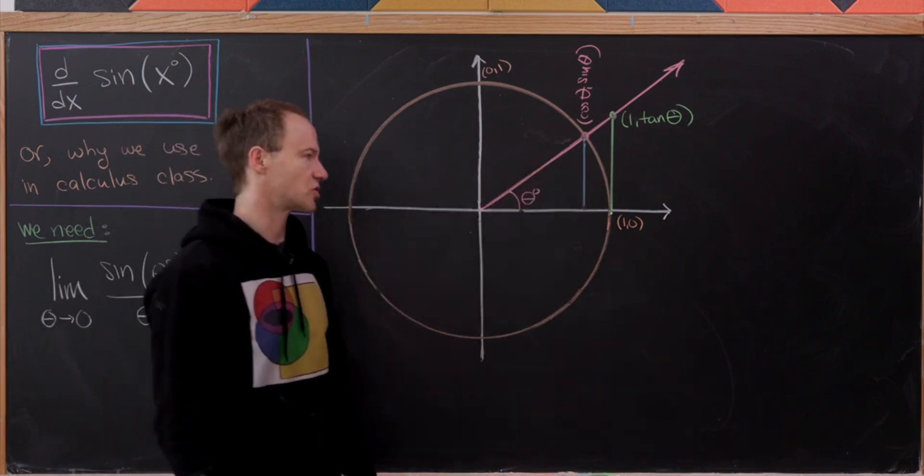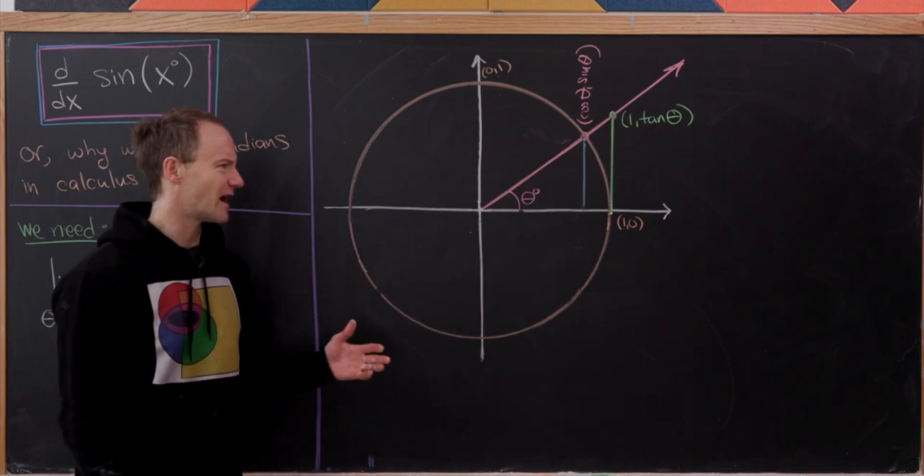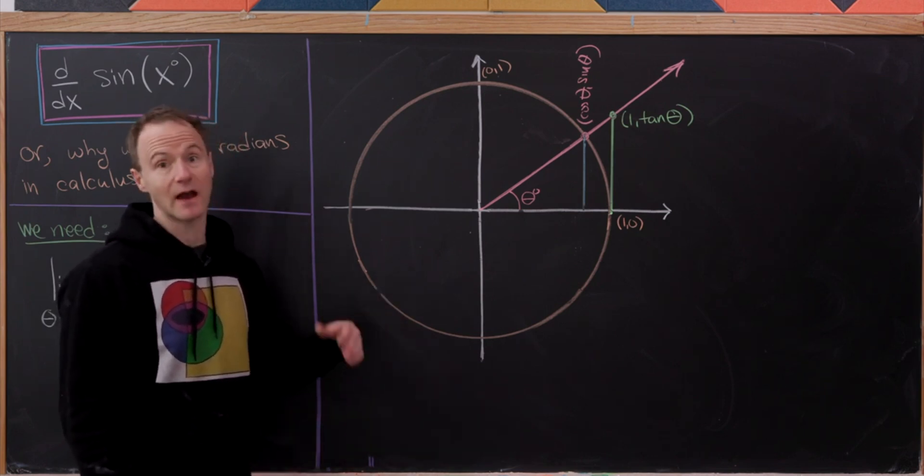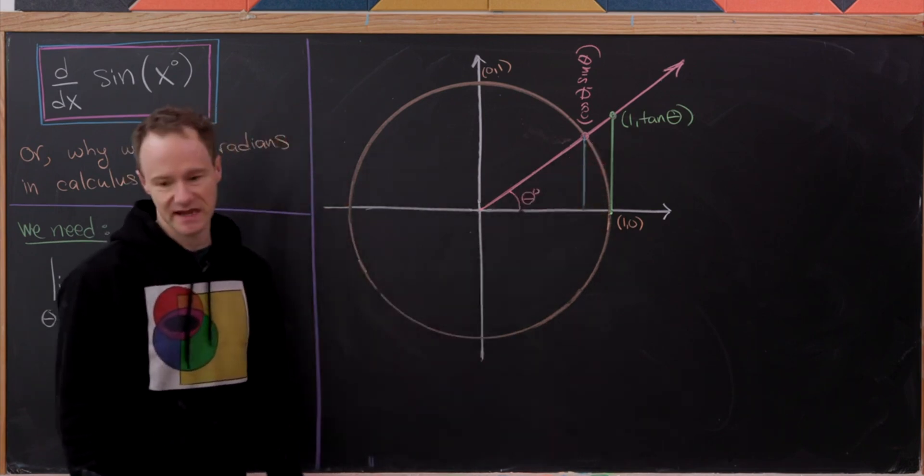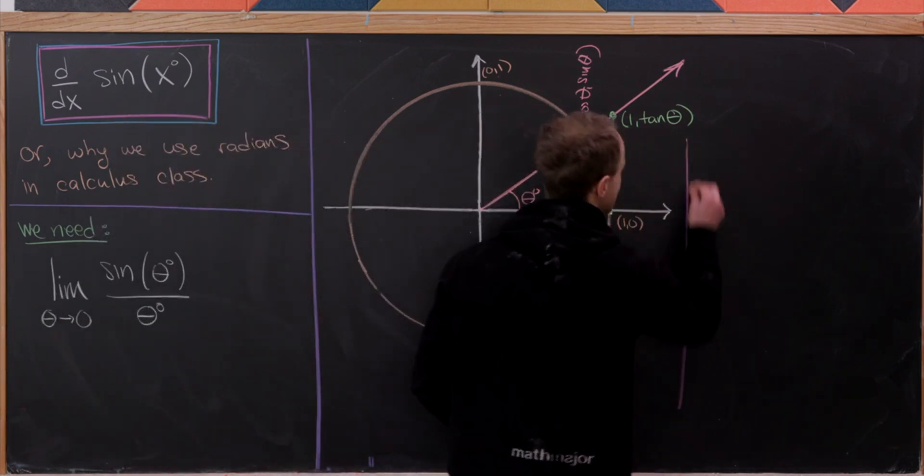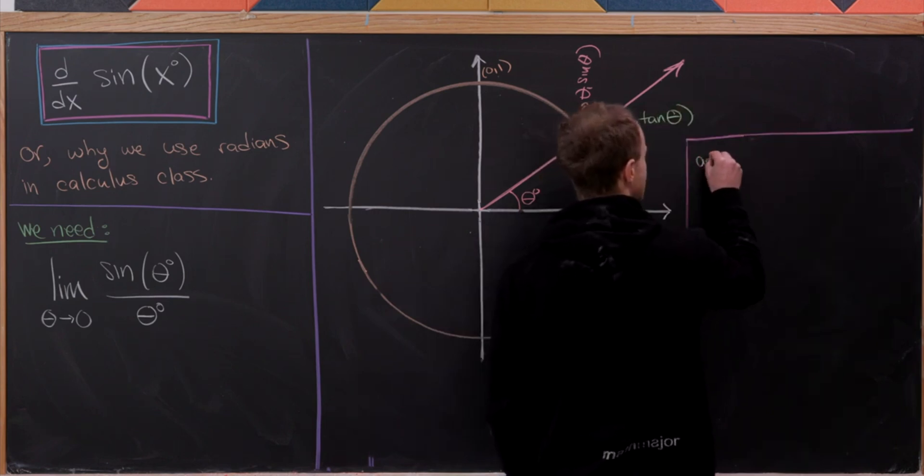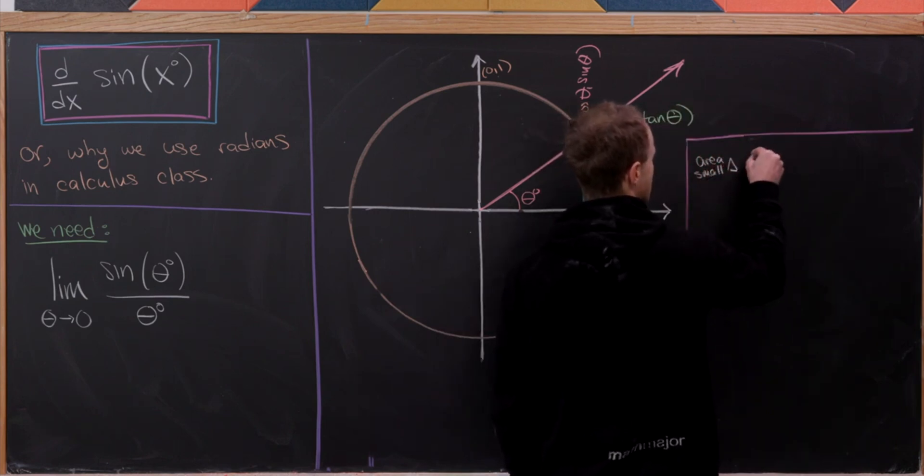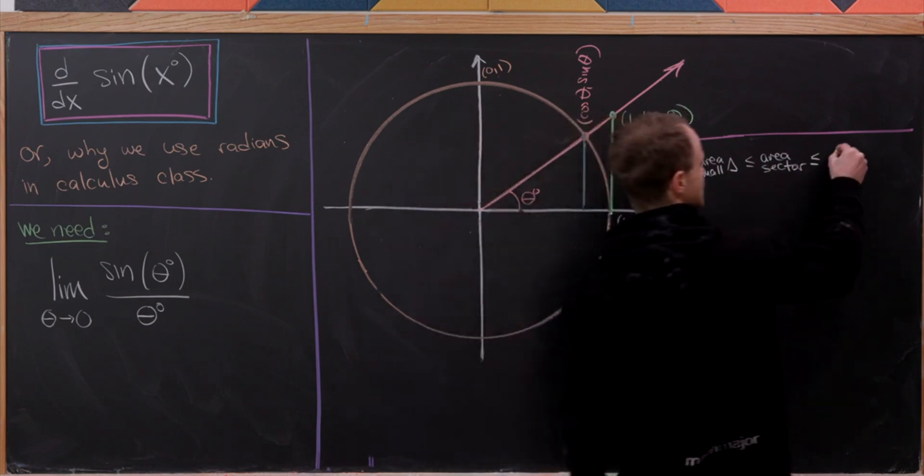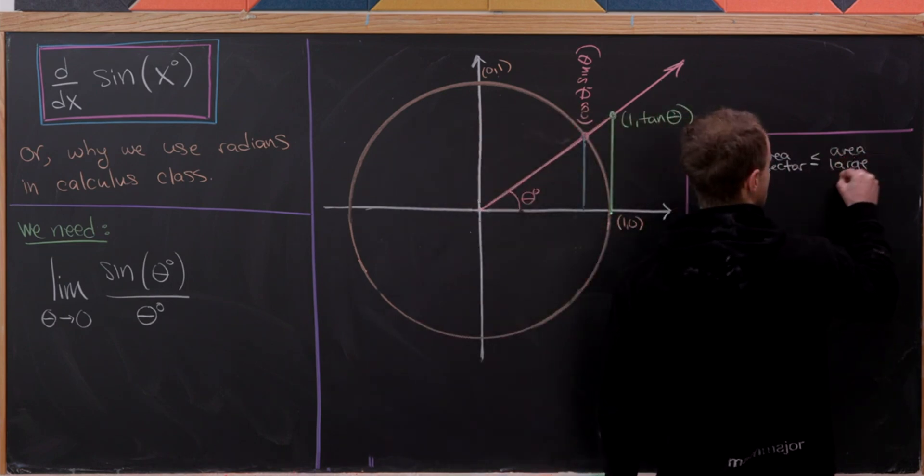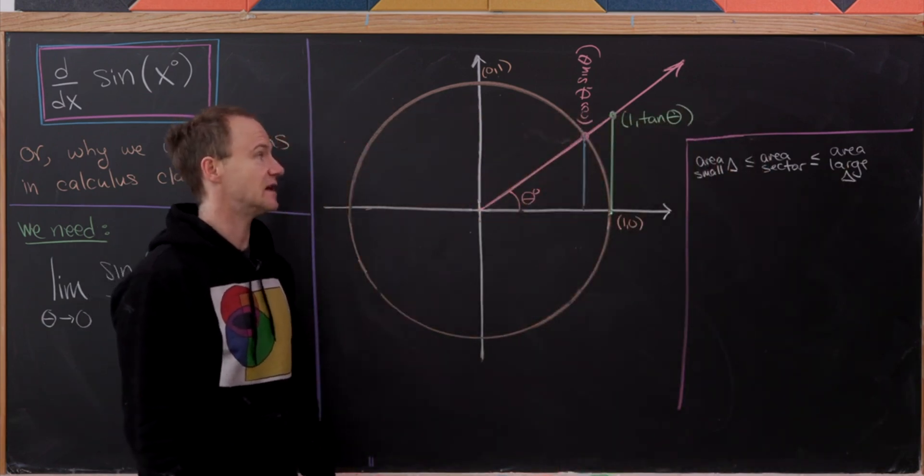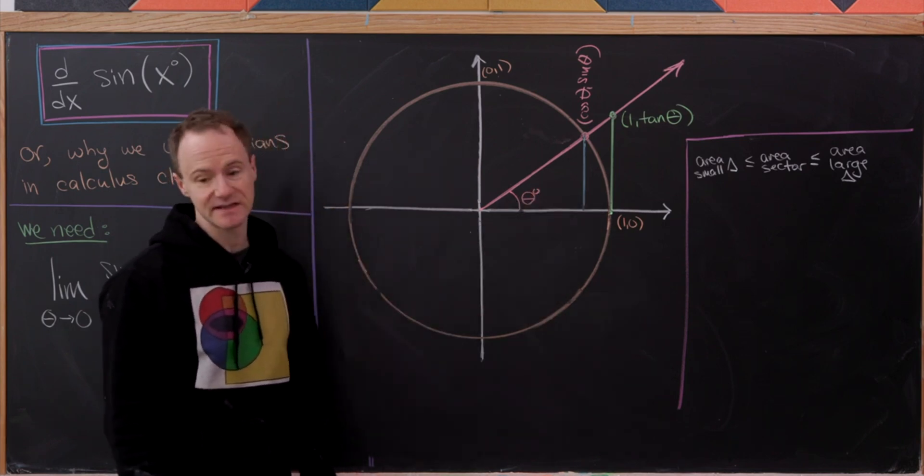Observe that this small triangle and this large triangle are similar simply by—you could use a number of theorems—but maybe the angle angle angle theorem. So anyway, you can calculate that that y coordinate or the height of that triangle is tangent theta. But now notice that we get an obvious inequality built out of this whole setup, and that obvious inequality is that the area of the small triangle is less than or equal to the area of the sector of the circle, which is less than or equal to the area of the large triangle. Because observe that this sector of the circle is completely contained in the large triangle and it completely contains the small triangle.